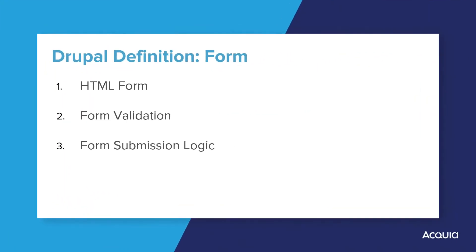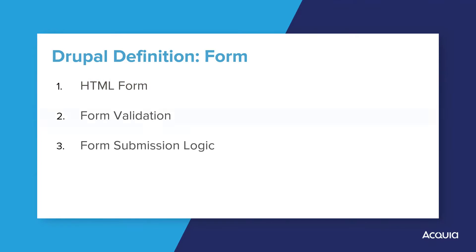Just so we have a shared understanding of the term form in the Drupal context, a Drupal form encompasses essentially three components executed in a sequential process. First, Drupal provides the actual HTML form that is displayed in the user's browser for collecting their input. The second part of a Drupal form is to validate the user entered data.